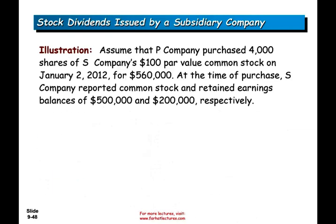Let's take a look at an example. Assume P company purchased 4,000 shares of S company at $100 par value common stock on January 2nd, 2012 for $560,000. At the time of the purchase, S company reported common stock of $500,000 and retained earnings of $200,000.